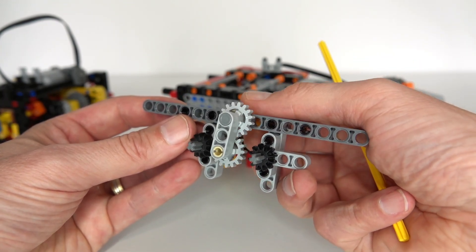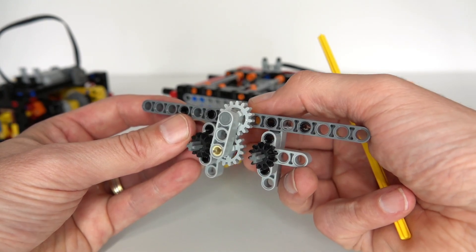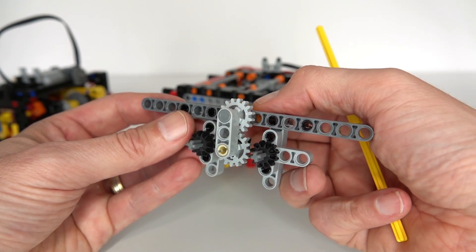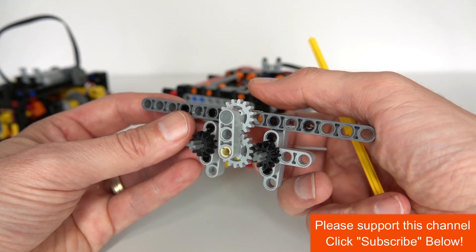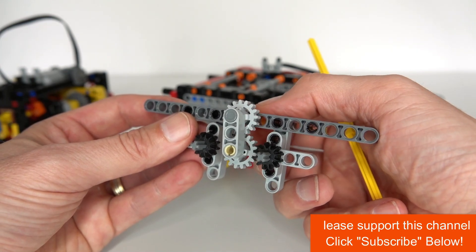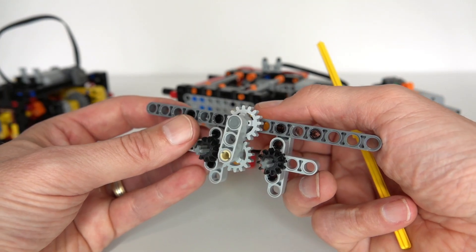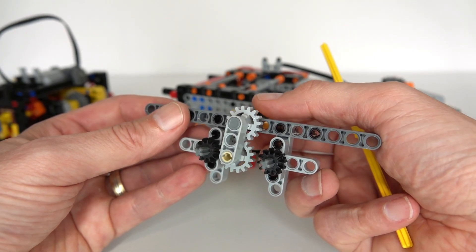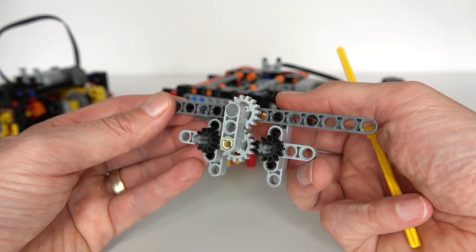As the motor changes direction and goes in the opposite direction, it will connect to the right output gear. That's kind of how you split the functionality depending on the direction of the motor, either connecting to the left gear or to the right gear.